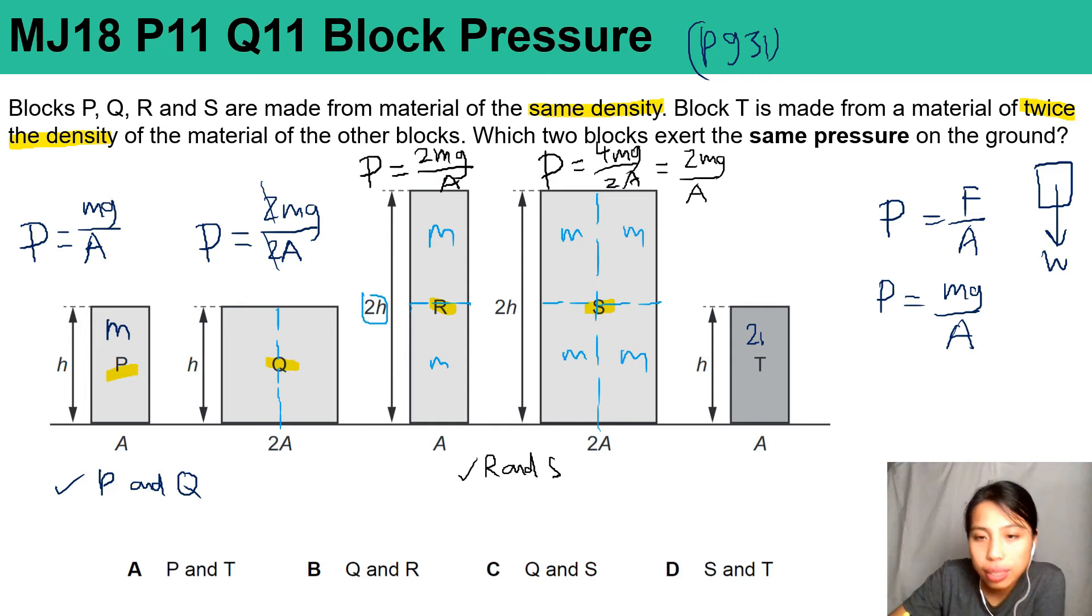Same size, same shape, but twice the density, so the mass is doubled. So in this case, the pressure that this last block T exerts on the table will be 2mg over just A.